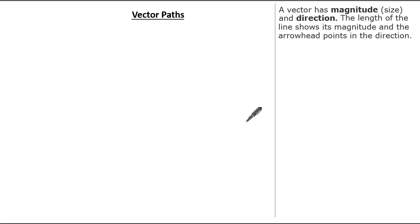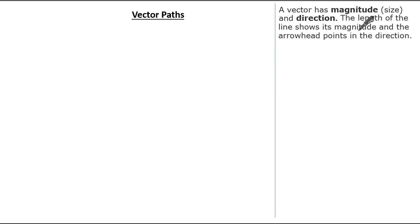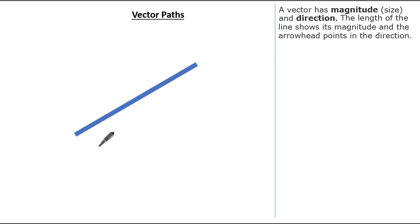Hello everyone and welcome to this tutorial on vector paths. Before I begin on the importance of a vector path, let's recap on what a vector is. A vector has both size, magnitude and direction. The length of the line shows its magnitude or its size and the arrowhead points in the direction.